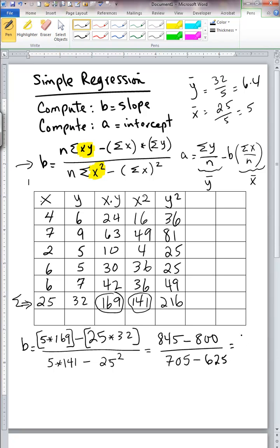So in the numerator we have 45. In the denominator we have 80. So 45 divided by 80 is 0.5625.